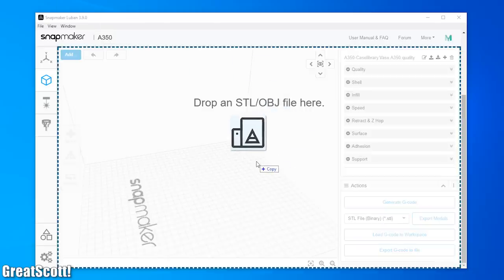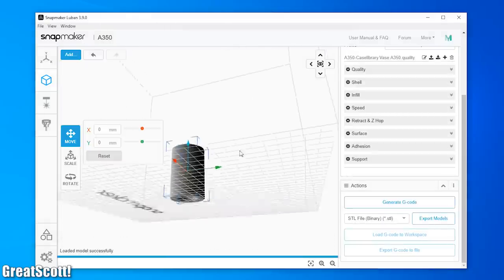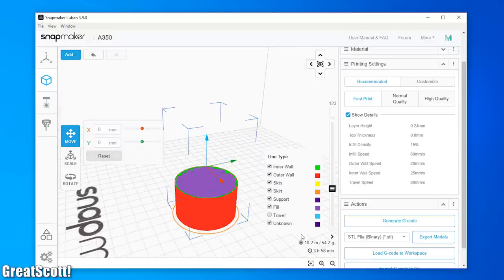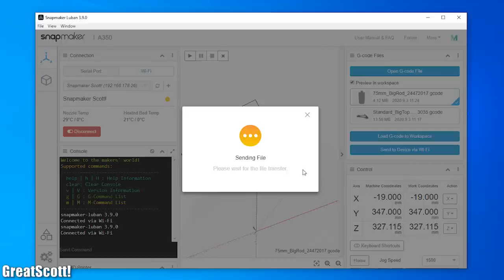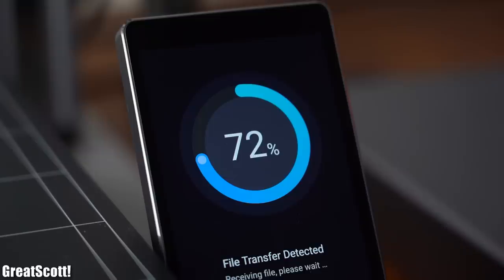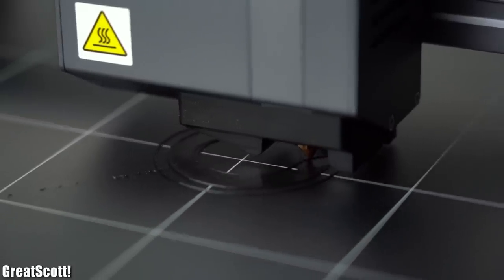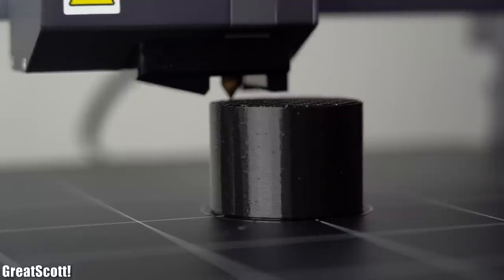Moving on though, after placing the first 3D model for my new spool holder inside the software, I sliced it and simply sent it over to the machine through wifi which was pretty handy. And just like that the machine started printing without any problems and did its job pretty well.